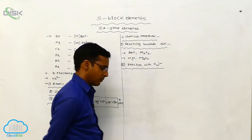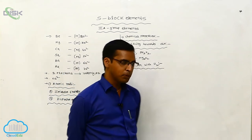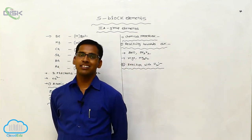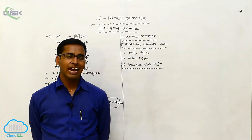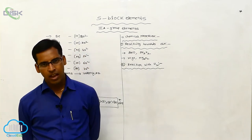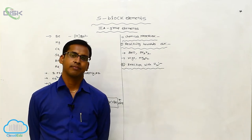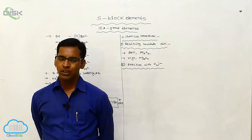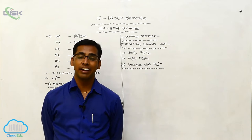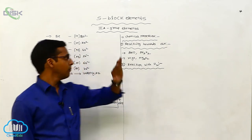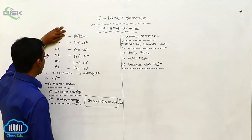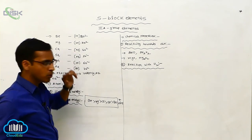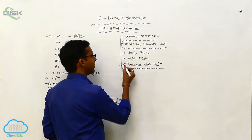Reaction with hydrogen. Except beryllium, the remaining metals in the secondary group react with hydrogen to form metallic hydrides. Beryllium does not react with hydrogen and does not form beryllium hydride. Except beryllium, all remaining group 2 metals form hydrides with hydrogen. This is a very important property.